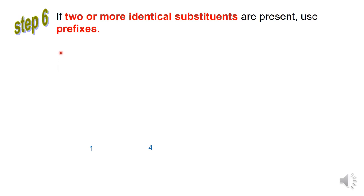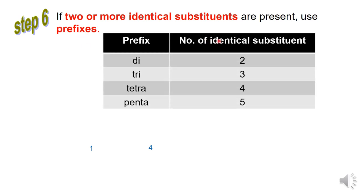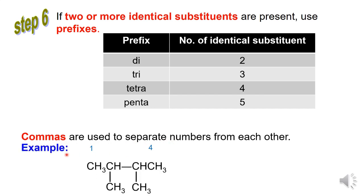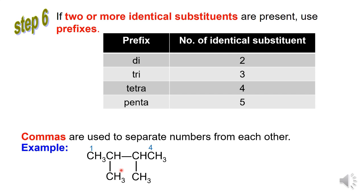Step 6: If two or more identical substituents are present, use prefixes: two identical substituent groups is di, three is tri, four is tetra, five is penta. Commas are used to separate numbers from each other. Example: this structure has two identical substituents — CH3 bonded to carbon number 2, and another CH3 bonded to carbon number 3. Two identical substituent groups use the prefix di. The IUPAC name is 2,3-dimethyl-hexane.